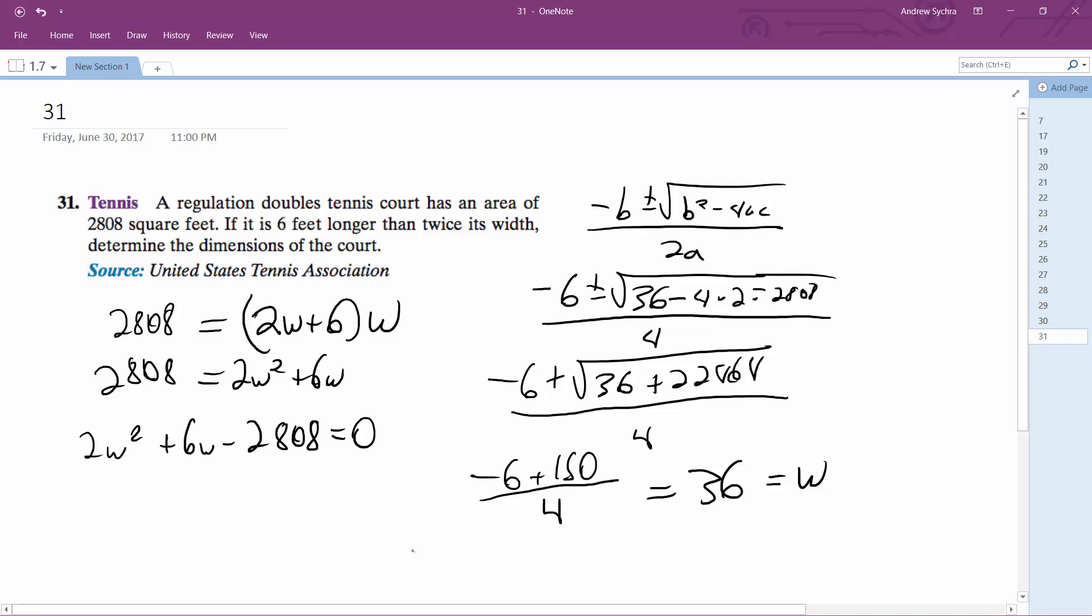The length is six more than twice that, so 72 plus 6. Length equals 78 feet and width equals 36 feet. Then 78 times 36 gives 2,808 square feet. These are the dimensions.